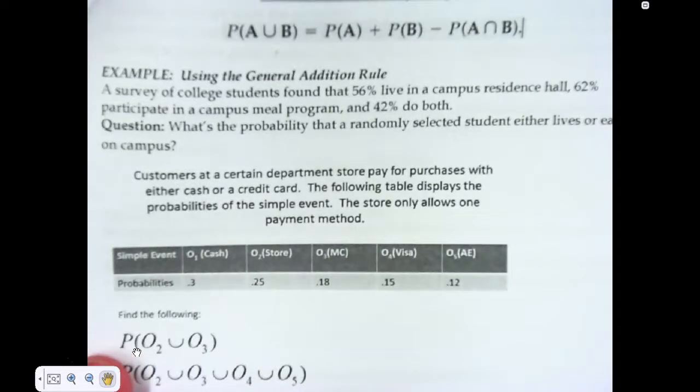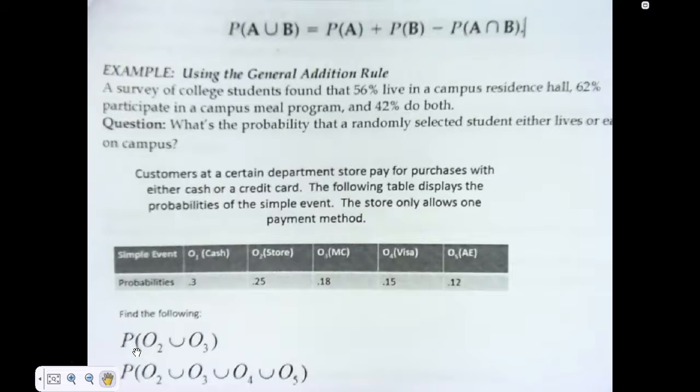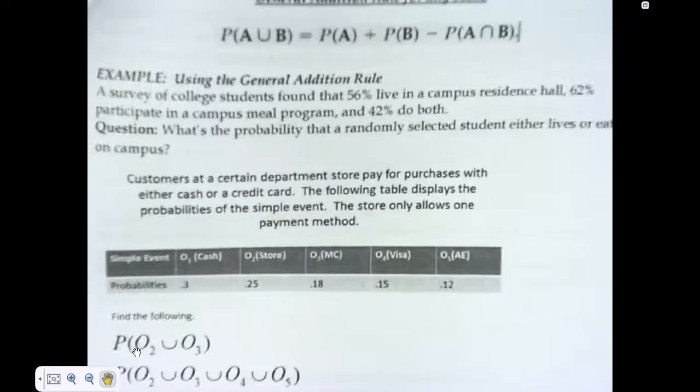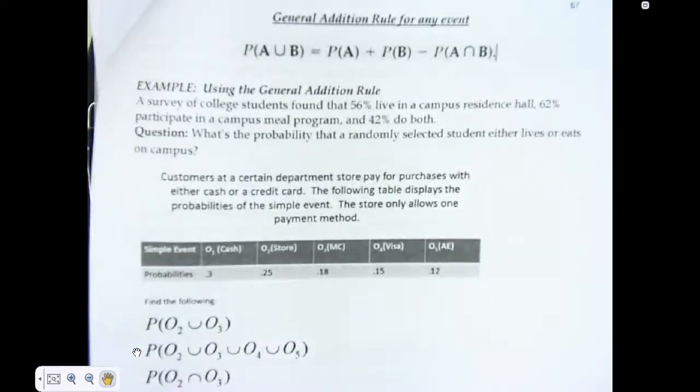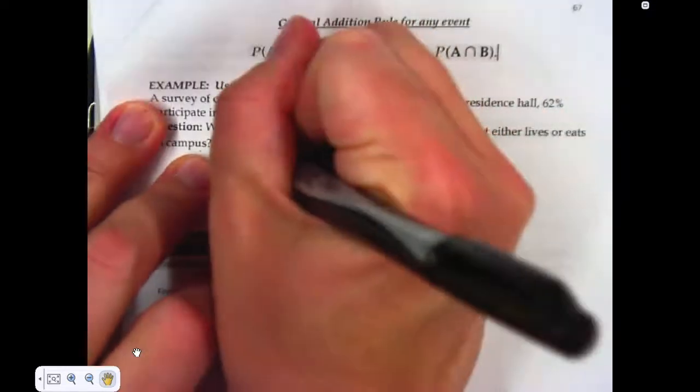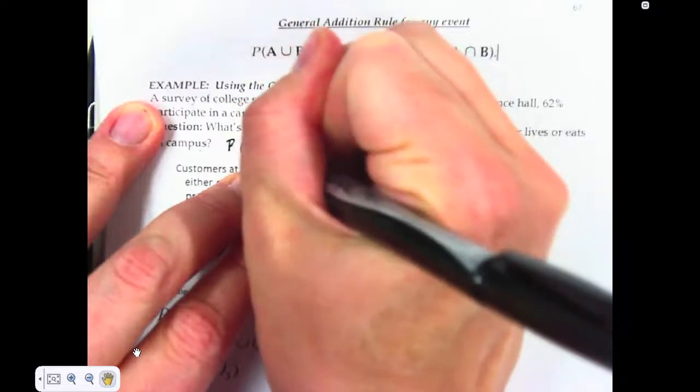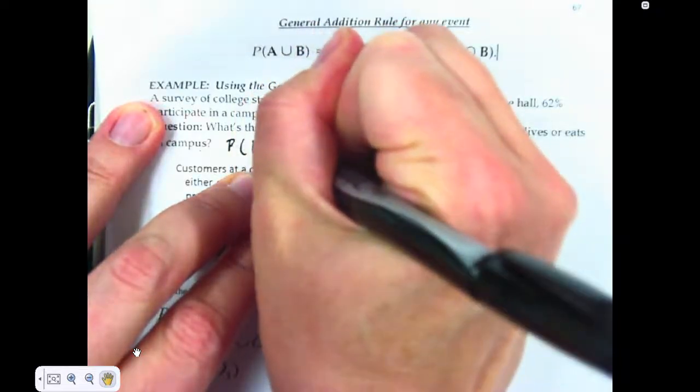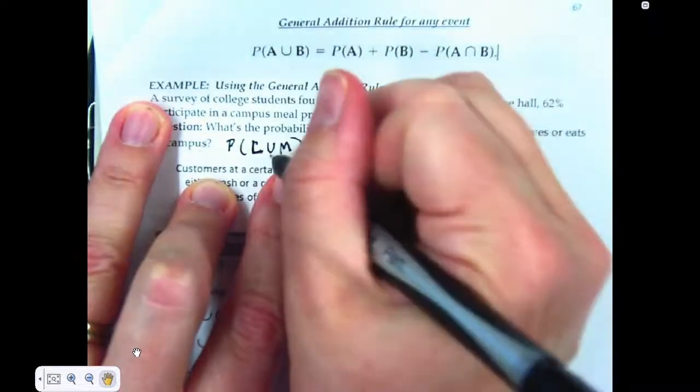We have the college students example: 56% live on campus, 62% have a meal plan, 42% both. What's the probability that a randomly selected student either lives on campus or has a meal plan? So I'm going to take the probability of living on campus, which is L, union meal plan M. That's a union symbol.